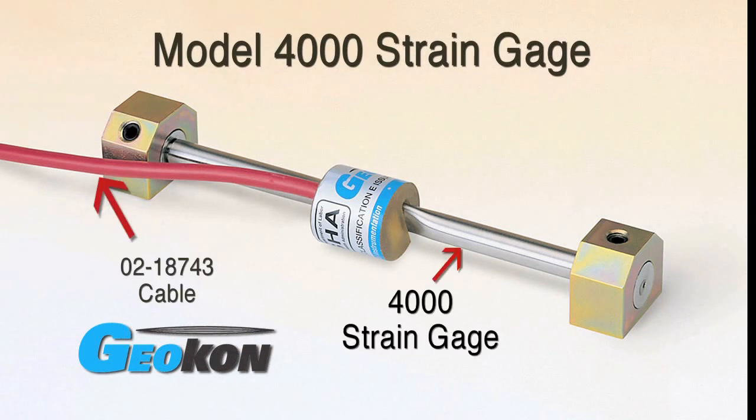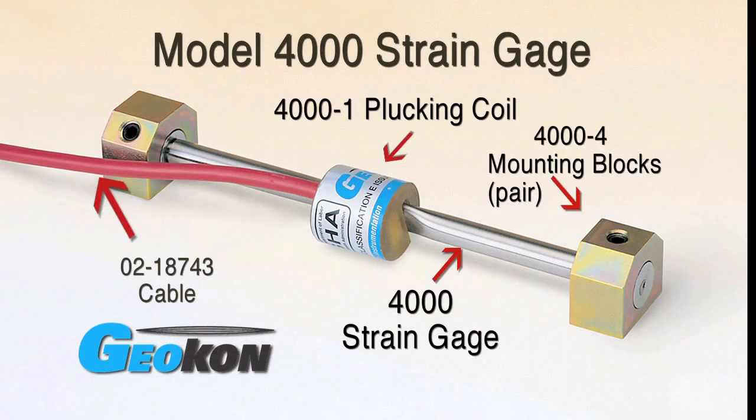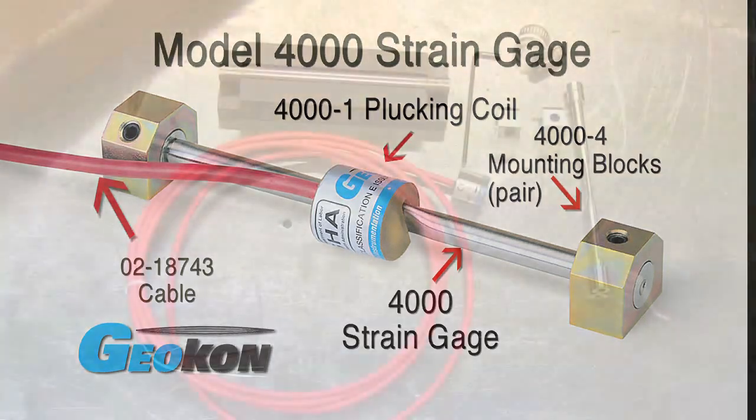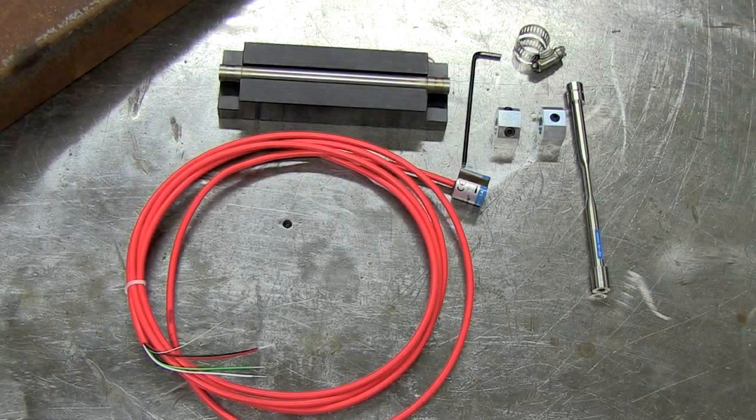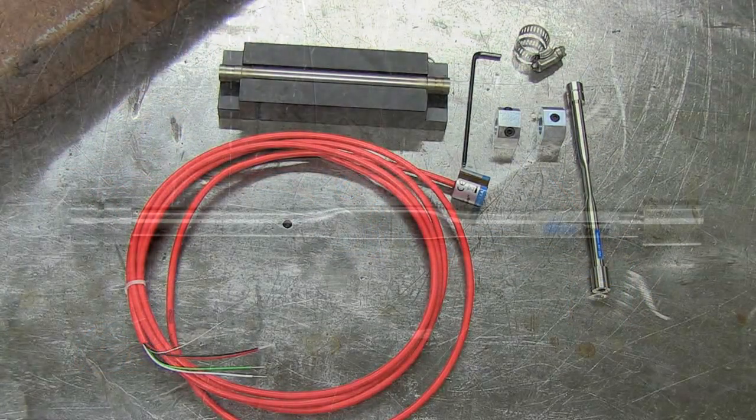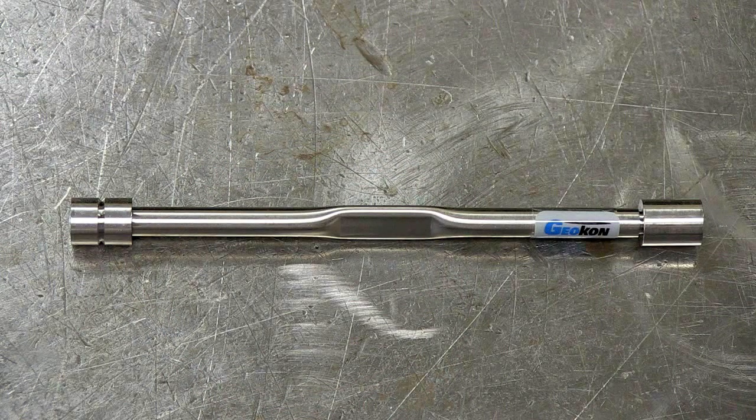Today we're going to talk about the installation of the Giacton model 4000 strain gauge. These items here are the essential elements. This is the strain gauge itself, all stainless steel.